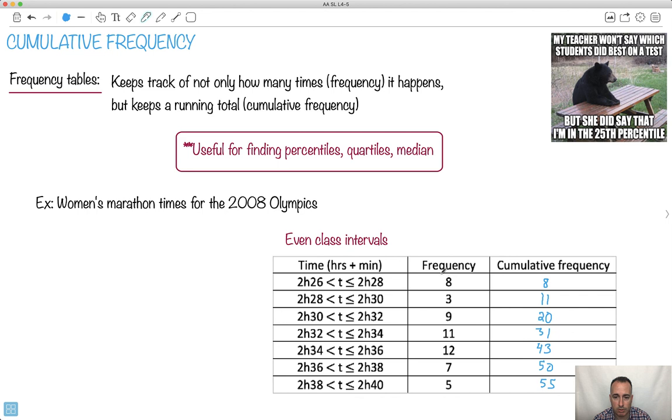That tells me there's a total of 55 people here who are counted. But this can also be useful because we can make a conclusion like, for example, this one right here. So we can say we know that 50 people ran in under 2 hours and 38 minutes.